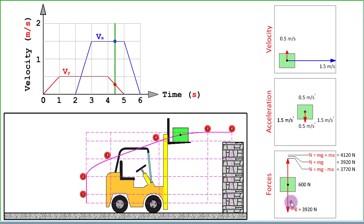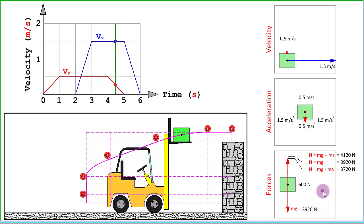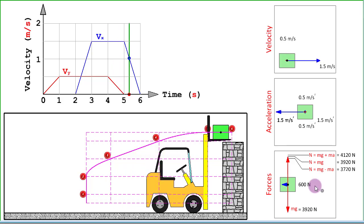Between 4 and 5 seconds we have deceleration in the vertical direction — a downward acceleration — caused by a net downward force of 200 newtons. So the normal reaction is 200 newtons less than the weight: normal reaction is 3720 newtons and the weight is 3920 newtons. In the last phase, from 5 to 6 seconds, we decelerate in the horizontal direction. The backward acceleration force is m times a: 400 kg times 1.5 m/s² gives 600 newtons of force towards the left, again caused by friction. Those were the six free body diagrams.